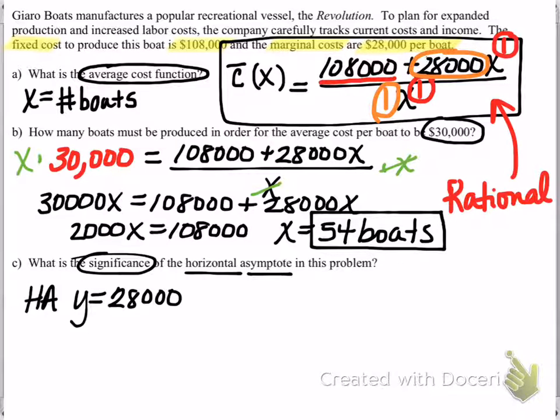And some people who are visual might want to take a look at a graph. If you did want to put this in your graphing calculator, it would require you to adjust your window considerably. Now remember, since x is the number of boats, over here in this region, negative boats really doesn't make sense. So I won't even bother with the left-hand side of this graph. But if you were to look at the right-hand side of the graph, and again, adjusting your window because the y values will have to be larger than 28,000, you'll see that you have the horizontal asymptote here.